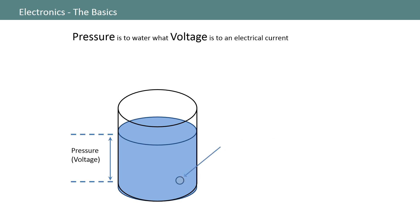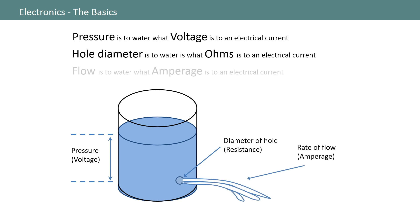The diameter of the hole in the bucket will realize a certain amount of resistance on the water that wants to exit through that hole. The wider the hole, the less the resistance. And finally, the flow of water that exits that hole is the same as amperage in an electrical system.